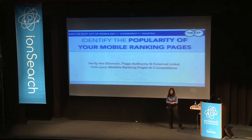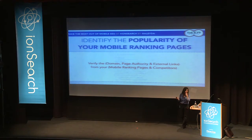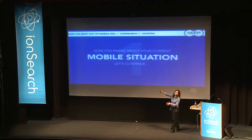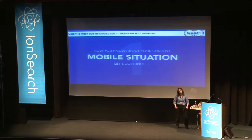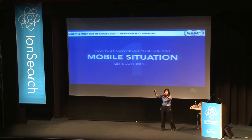Verify the domain authority and external links of competitors — where they're getting links from — as this gives you opportunities to identify potential actions for the future. With all of this, you now know your initial mobile situation: which keywords are getting traffic, how your website is shown to mobile users, and how it appears in the SERPs.